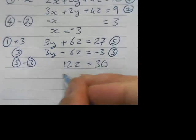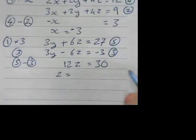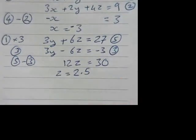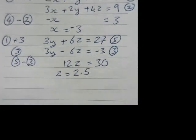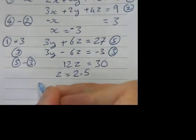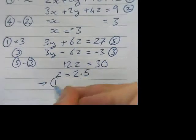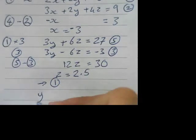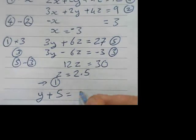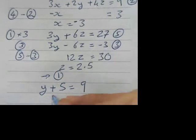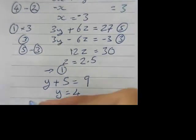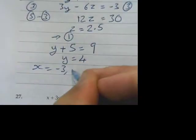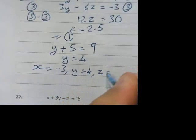And 27 minus minus 3 is 30. So therefore z is... What's that? 2 and a half? I think. Yeah. So now I know that x is 3 and I know that z is 2.5. I can substitute back into 1 and say that I've got y plus 5 equals 9. So y must be 4. So my answer is x is negative 3, y is 4, and z is 2.5.